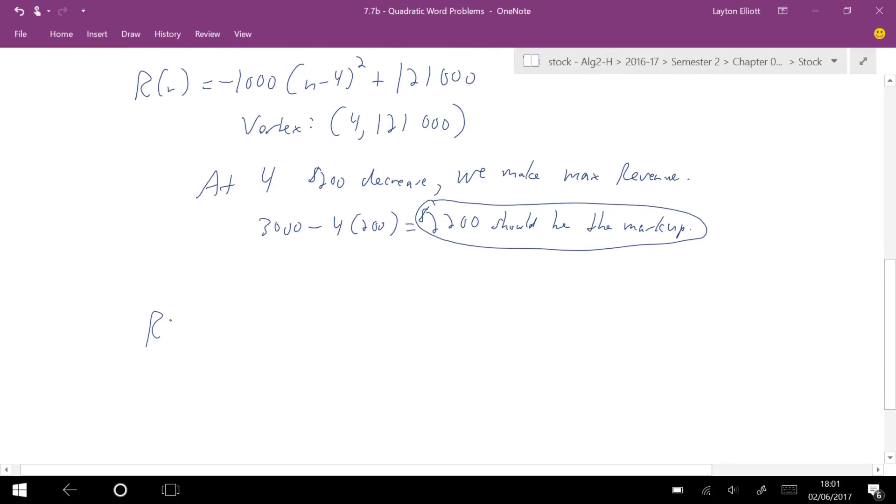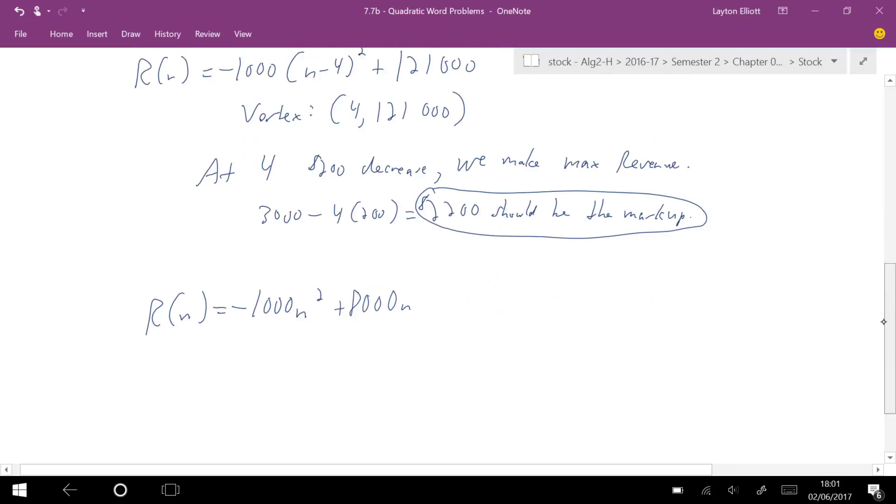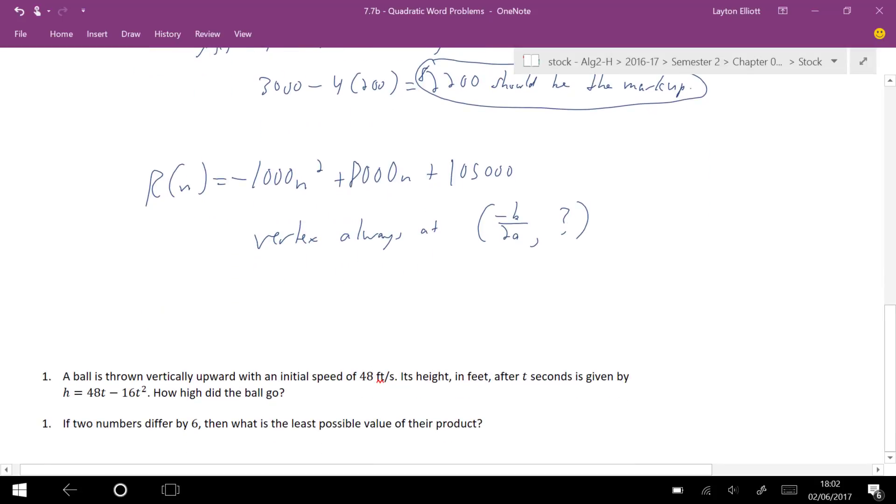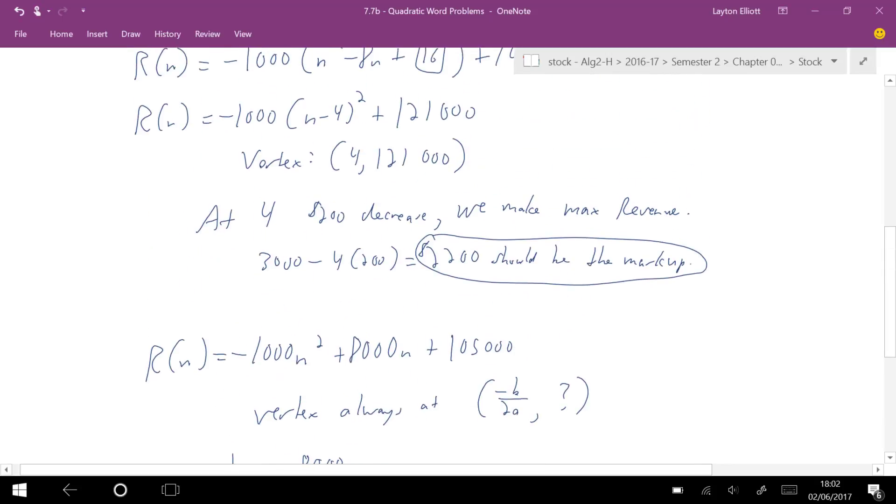Let's go back to the original quadratic. I've got R(N) is equal to negative 1,000 N squared, plus 8,000 N, and then plus 105,000. If you don't want to complete the square, a shortcut is to know that the vertex is always at negative B over 2A, something. So if I know that, I know that negative B over 2A is negative 8,000 over 2 times negative 1,000. That's my negative B over 2A. So that means that the vertex is at 4. And that's what we got up there for the vertex.